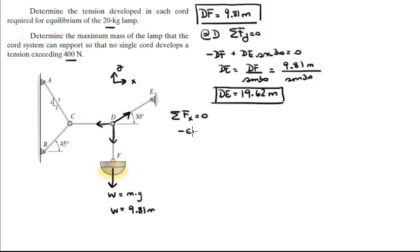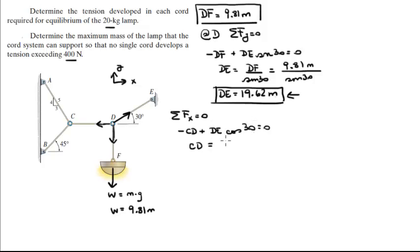CD going straight to the left plus DE times the cosine of 30 equals zero. Solving for CD, you get CD equals DE times cosine of 30. Since DE is 19.62 times the mass, then 19.62 times cosine of 30 gives CD equals 17 times the mass. That's the tension in CD.